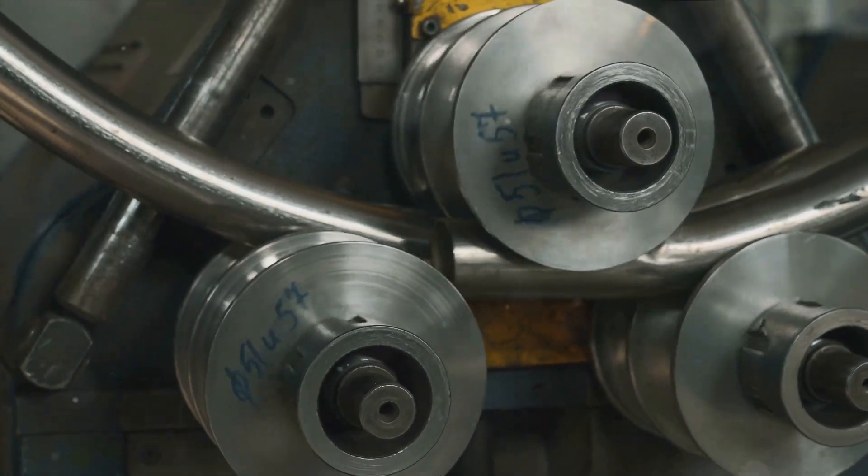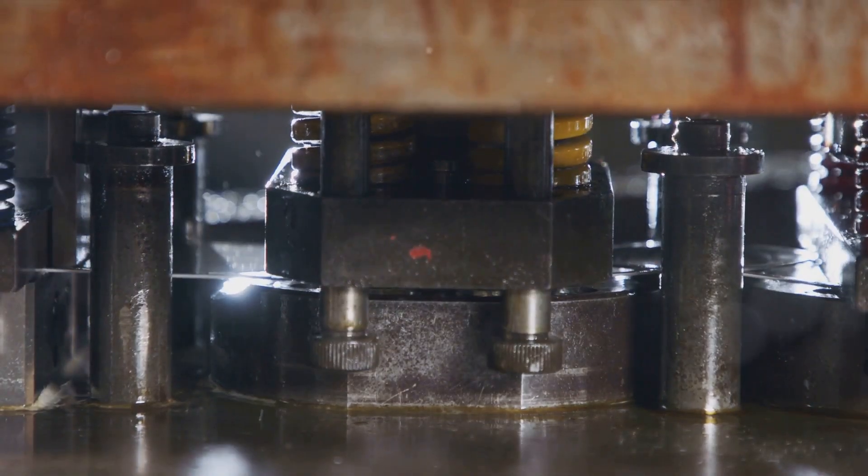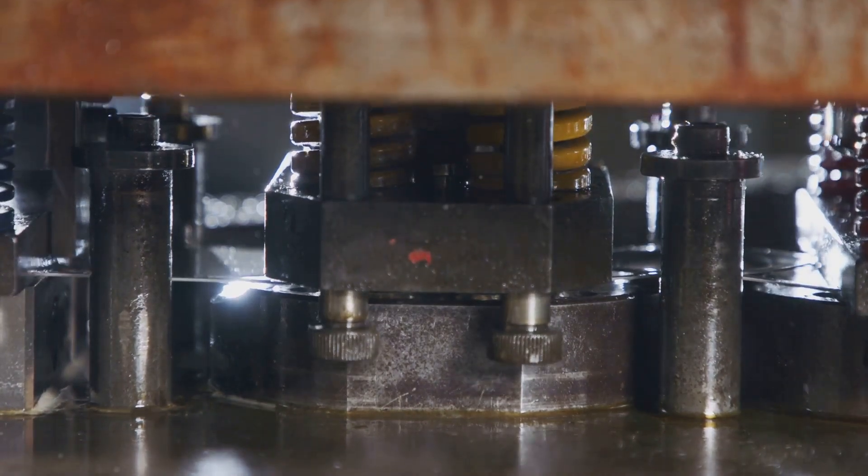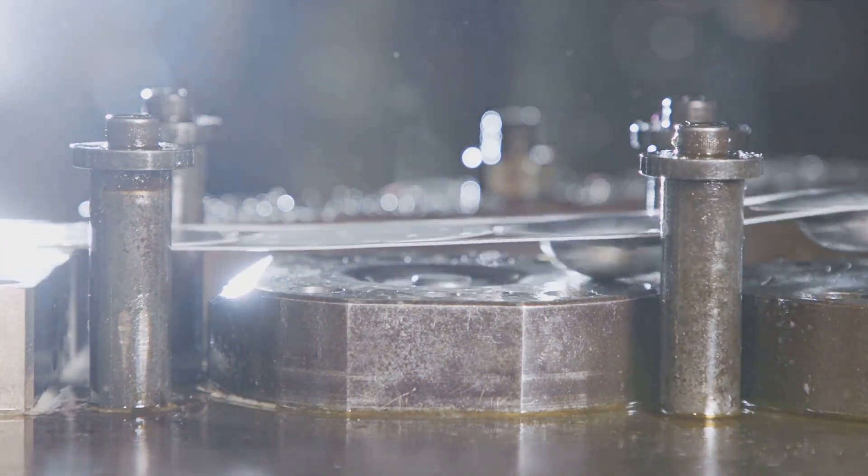The die is placed into the machine, and when the machine is activated, it applies pressure to the material, forcing it into the die's shape. It's a bit like a cookie cutter, but for metal.